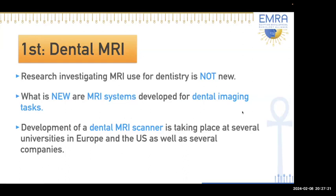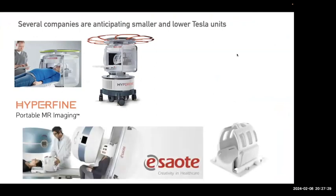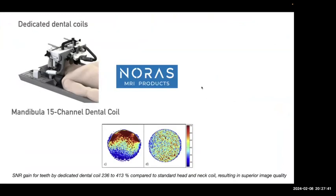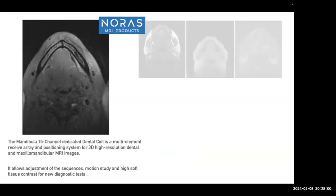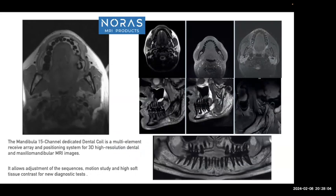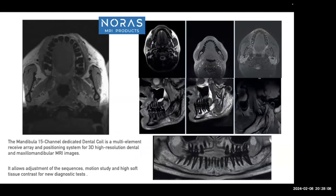To summarize, research investigating MRI use in dentistry is not new, but what is new is MRI systems developed specifically for dental imaging tasks. Several companies are anticipating smaller, lower-tesla units for dental purposes, along with dedicated dental coils such as the Noris mandibular 15-channel dental coil, which shows a signal-to-noise ratio gain of 236 to 413 percent compared to a standard head and neck coil — resulting in superior image quality and enabling 3D high-resolution dental and maxillomandibular MRI images.